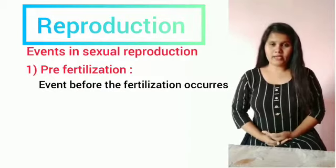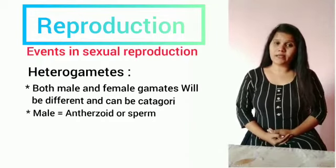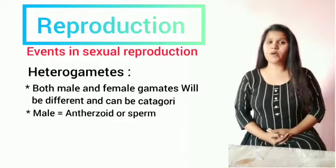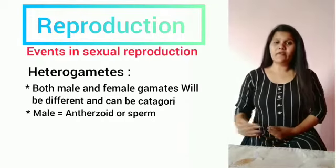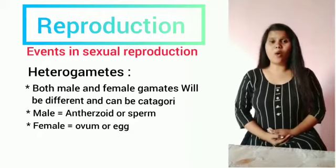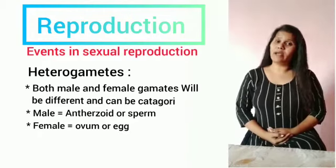Whereas in some higher algae and fungi, both the male and female gametes are distinct — we can find which one is male and female. So we call them heterogametes. In the case of heterogametes, the male gamete is called the antherozoid or sperm, whereas the female gamete is called the ovum or egg.